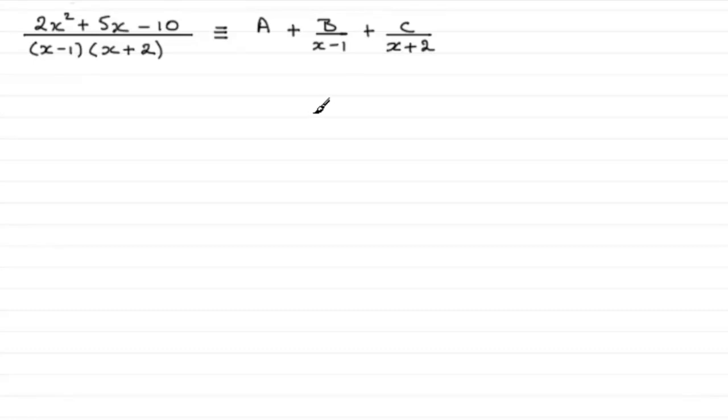To do something like this all we need to do is just simply multiply both sides by this denominator here, x minus 1 times x plus 2.